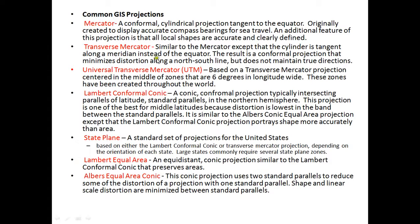Common GIS projections include Mercator, transverse Mercator, universal transverse Mercator, Lambert conformal conic, state plane, Lambert equal area, and Albers equal area conic. We generally use these four projection systems in GIS: Mercator, transverse Mercator, and UTM, which is a cylindrical system, plus Lambert conformal conic. Mercator is a conformal cylindrical projection tangent to the equator, originally created to display accurate compass bearings for sea navigation, with all local shapes accurately defined.